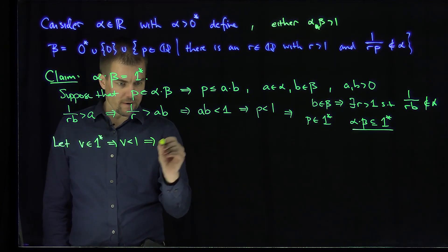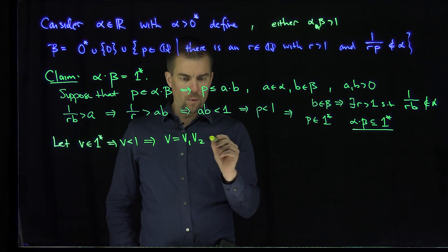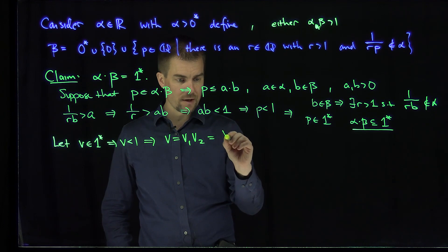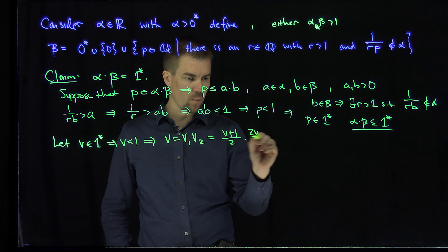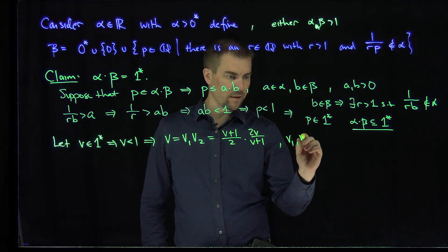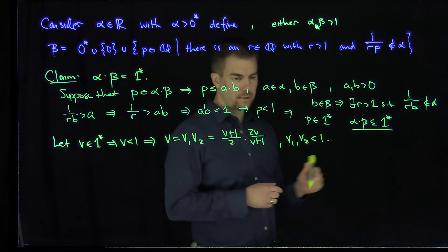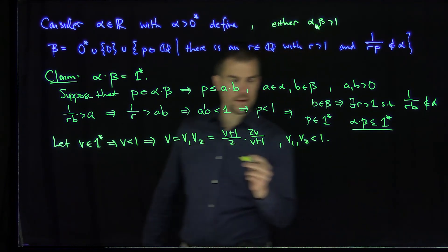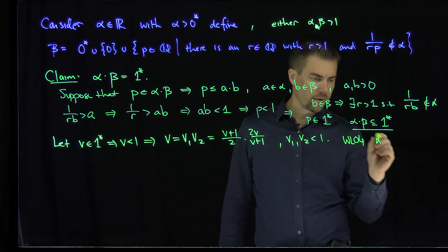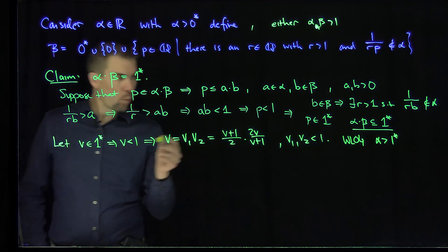So v < 1. We write v as v1·v2, where v2 = 2v1/(v1+1), and both v1 and v2 are less than 1. Without loss of generality, suppose alpha is bigger than 1*, so 1/v1 is bigger than 1.